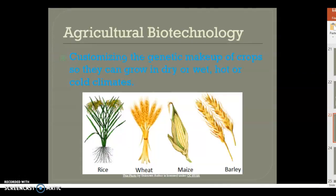Some products of agricultural biotechnology include customizing the genetic makeup of crops. Scientists will use the genetic makeup of certain crops so that the plants can grow in dry or wet, hot or cold climates, depending on what is needed. For eastern North Carolina, we need crops that can grow in hot climates because in the summertime it gets super hot, so we need crops that are able to withstand that heat.